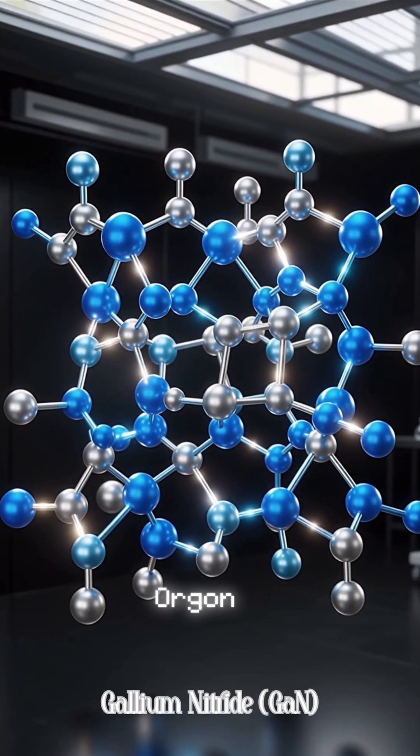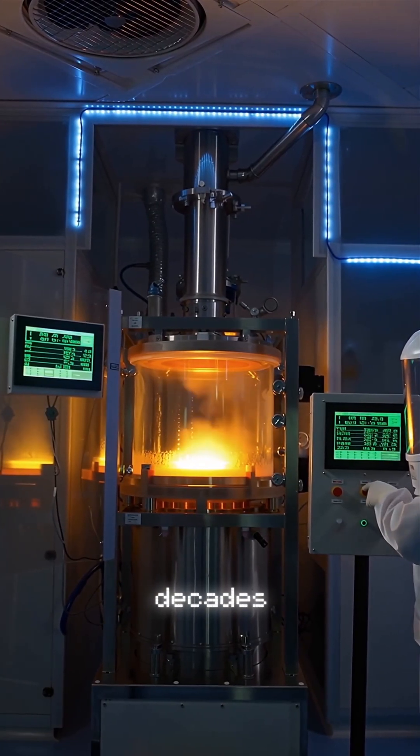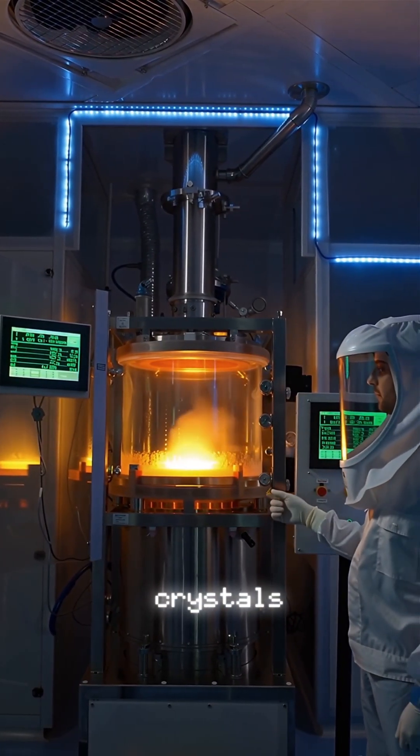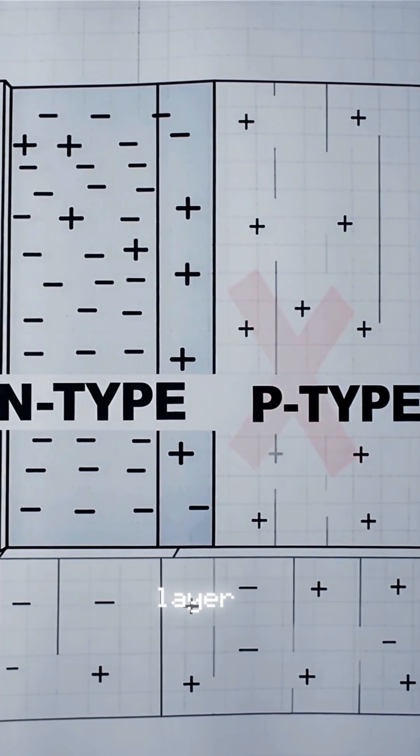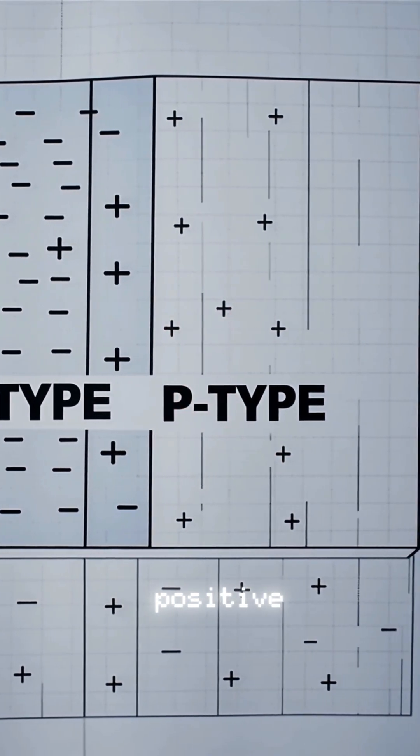The ideal candidate was gallium nitride, or GaN, but scientists struggled for decades to grow perfect, high-quality crystals. And critically, they could only successfully create the negative n-type layer needed, not the positive p-type.